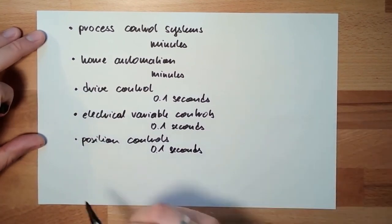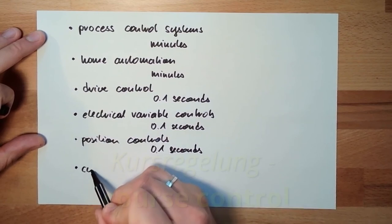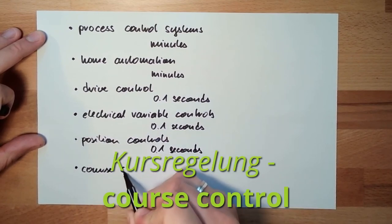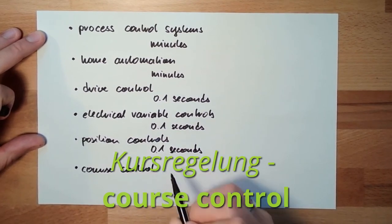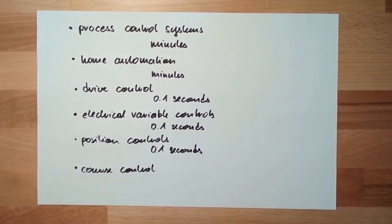And then we have course control. Course control, we want to influence, control the path of some vehicle, of an airplane, of a ship, of a vessel, or whatever.